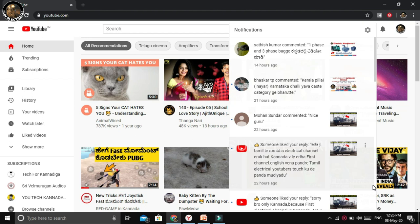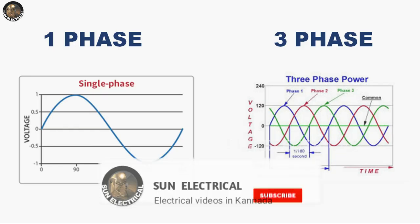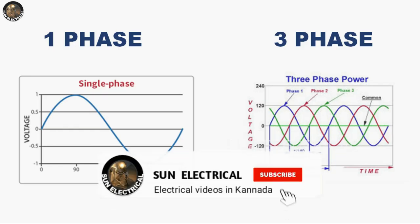So first, the single-phase and three-phase difference. If you have any doubt, comment in the comment box. So single-phase will be one sine wave, and three-phase will be three sine waves.